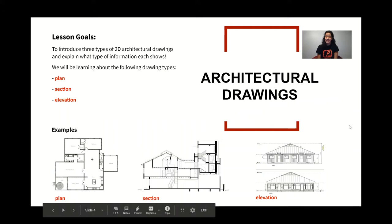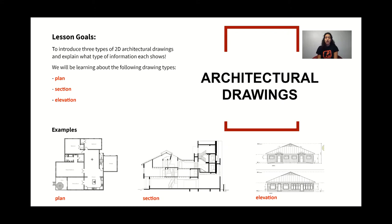We'll be learning more about architectural drawings. Our goals are to introduce the three types of 2D architecture drawings and explain what kind of information each shows. The three examples of architectural drawings we'll go into further detail are plan, section, and elevation.